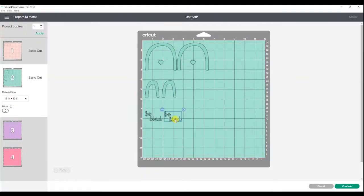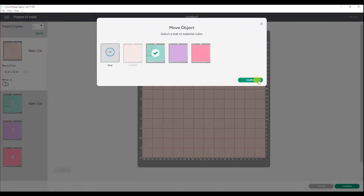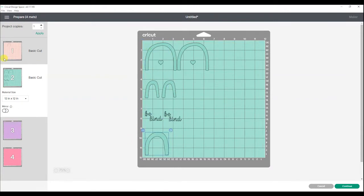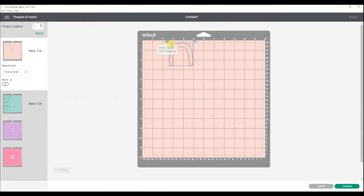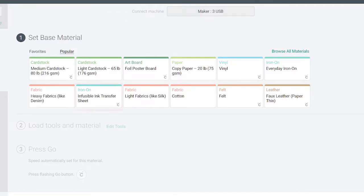Continue this process until all of the design elements are on one mat. Anytime you use infusible ink you will also want to mirror the mat so that the design looks backwards when it is cut. If you decide to cut everything separately instead of on one mat you will need to select the mirror option for each mat. So select mirror and click continue. Now we can select our material type. Search for infusible ink and then select more pressure. Anytime I cut infusible ink I always select the more pressure option. This makes it so much easier to weed after it's cut. If you are using Design Space on a tablet or phone you will not be able to select more pressure. That feature is currently only available when you are connected to a computer.